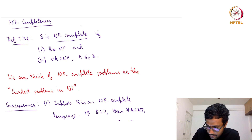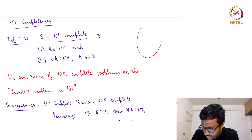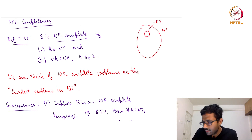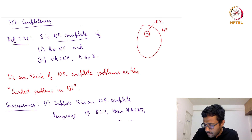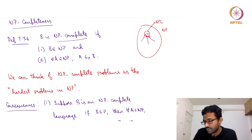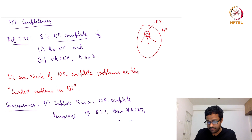Just to pictorially depict: suppose this is NP and suppose this is NP-complete. Now if B is in NP-complete, then not only is B in NP-complete — all the other languages in NP can be reduced to B.